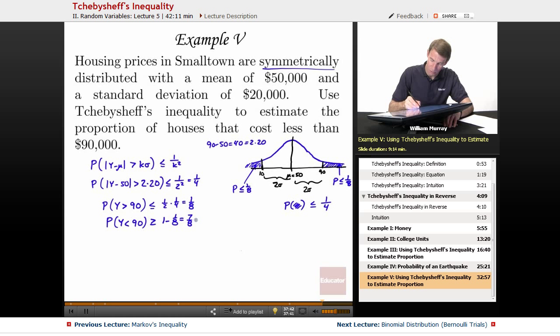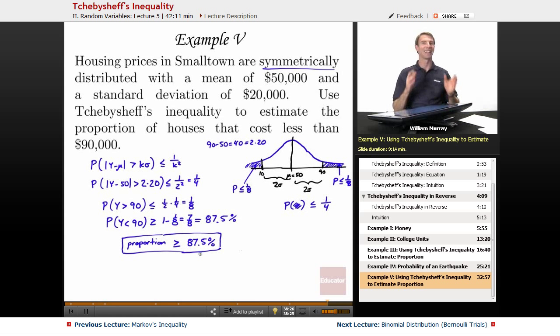And if we convert that into a percentage, that's halfway between 3 fourths and 1. So that's halfway between 75 and 100. So that's 87.5%. So the proportion or the probability, the proportion of houses that cost less than $90,000 in this town is, well, I can't say it's equal to 87%, but it's at least 87%. 87.5%. So I could say that at least 87% of the houses in this town must cost less than $90,000. That's the interpretation that I could put on that. At least 87% of these houses cost less than $90,000.